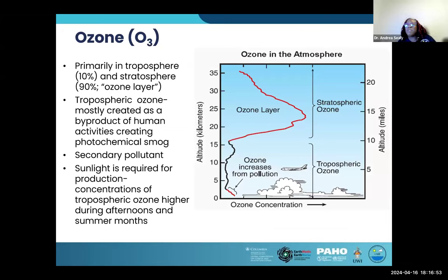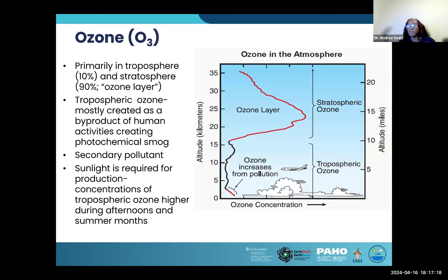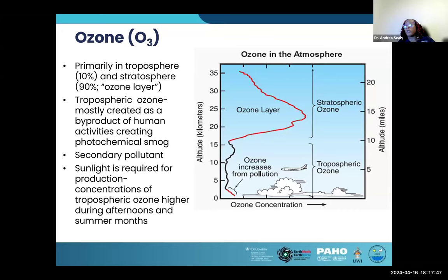Now, going into some atmospheric science and meteorology. Ozone, O3, exists primarily in two layers of the atmosphere. Ninety percent is in the stratosphere — the 'good ozone,' the ozone layer we hear so much about, at about 25 to 30 kilometers in altitude. Tropospheric ozone, in the layer where we live and experience our weather, is the pollutant we're talking about — the 'bad ozone.' This is mostly created as a byproduct of anthropogenic activities, creating photochemical smog. It's a secondary pollutant; sunlight is required for its production, and concentrations are higher during afternoons and summer months.